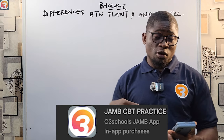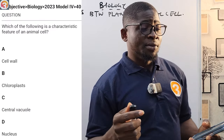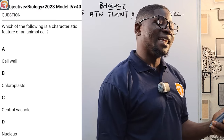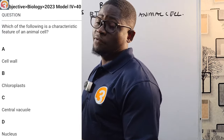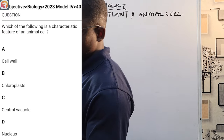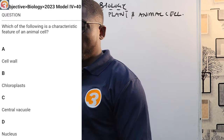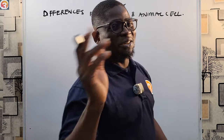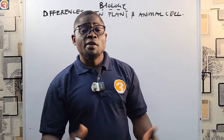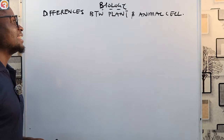Before we start, let us see a teaser question from the app — a 2023 question number 40. It says: which of the following is a characteristic feature of an animal cell? A: cell wall, B: chloroplast, C: central vacuole, D: nucleus. I'll come back to this question at the end of class. Now let's get back to the board.